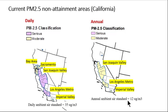The current attainment status of PM2.5 ambient air quality standards across California is shown on this slide. The different color shadings indicate air districts with serious versus moderate non-attainment. On the left, the attainment status for the 24-hour standard is shown. There are five air districts in non-attainment of the 24-hour standard: the Bay Area, Sacramento, the San Joaquin Valley Air District, Los Angeles Air District called the South Coast Air Quality Management District, and the Imperial Valley. On the right is the situation for the annual standard. There are three air districts in non-attainment of the annual standard: the San Joaquin Valley, Los Angeles Metro, and Imperial Valley.